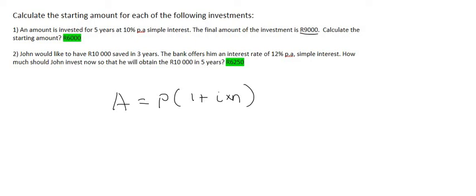We've been told for number one that the final amount is 9,000 Rand. The starting amount, we don't know what that is. That's the point of this question. The interest rate is 10% or 0.1 if you divide by 100 and it's for five years. The point of this now is to get P by itself.